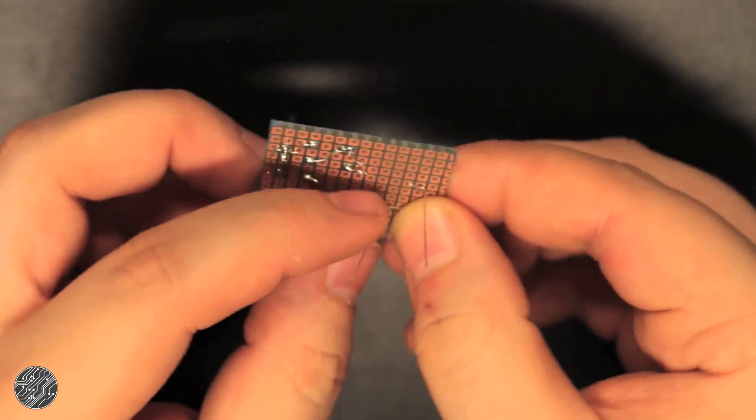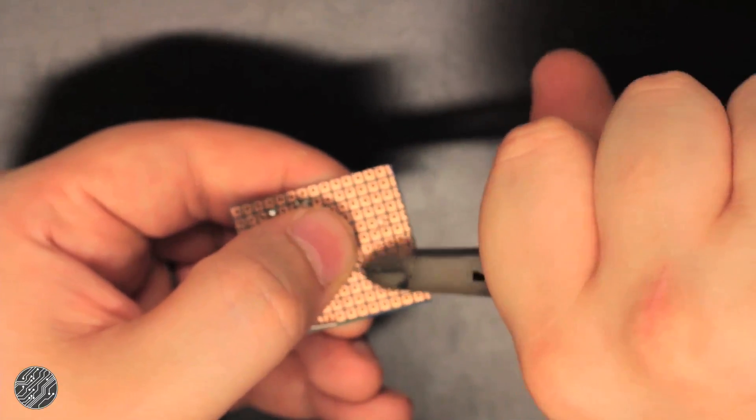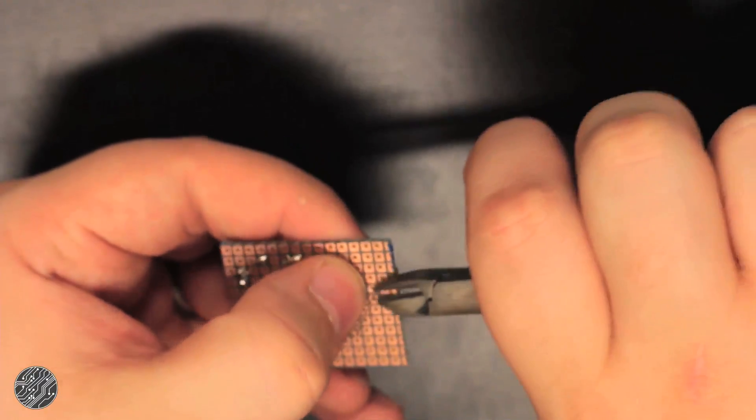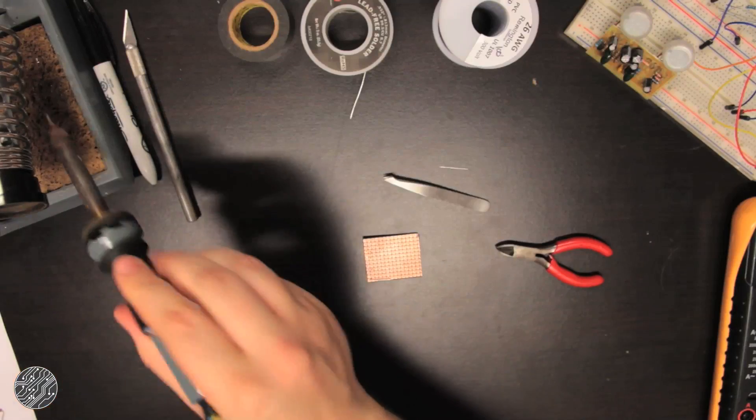Place resistors one at a time and bend the leads to form the traces. Refer to the layout drawing and count out how many holes over and up or down they need to go. Bend any remaining lead straight away from the board and trim off. Then solder into place.